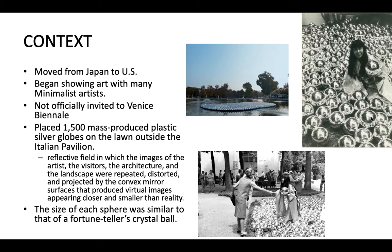She moved from Japan to the US and started getting in touch with gallery owners and promoters, beginning to show her work with many minimalist artists. She was not formally invited to the Venice Biennial, but an artist friend strongly encouraged her. She got permission to put her work on the lawn at the Italian pavilion — each nation has an exhibition space — and was able to display 1,500 plastic spheres on the lawn, compressed tightly so you could see a reflection of the surroundings and the people looking at them, creating a distorted sort of reality.